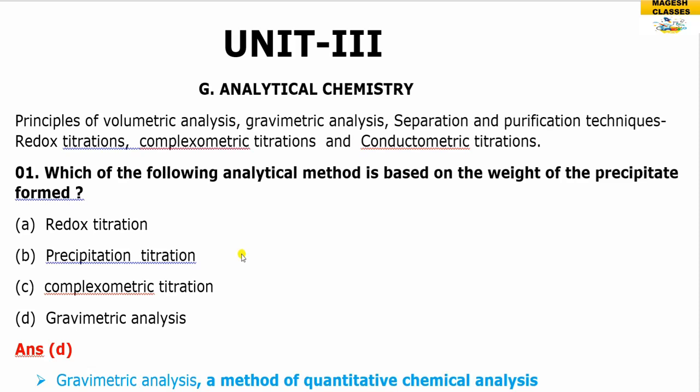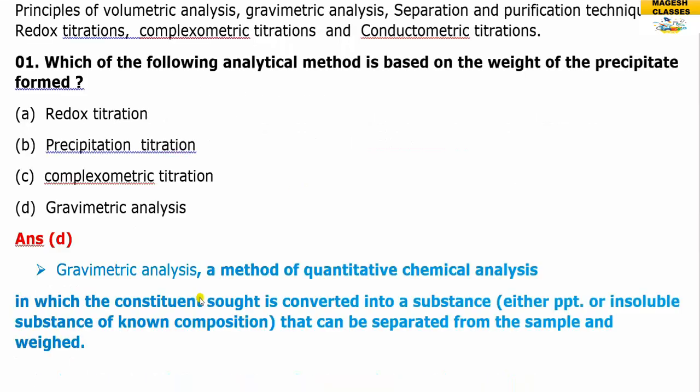The first question is: which of the following analytical methods is based on the weight of the precipitate? The options are redox titration, precipitation titration, complexometric titration, and gravimetric analysis. The answer is gravimetric analysis, because it is based on the weight of the precipitate.